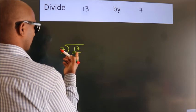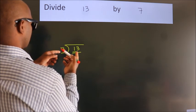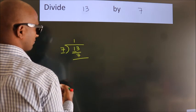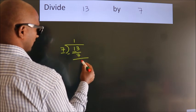A number close to 13 in the 7 table is 7 once 7. Now we should subtract. We get 6.